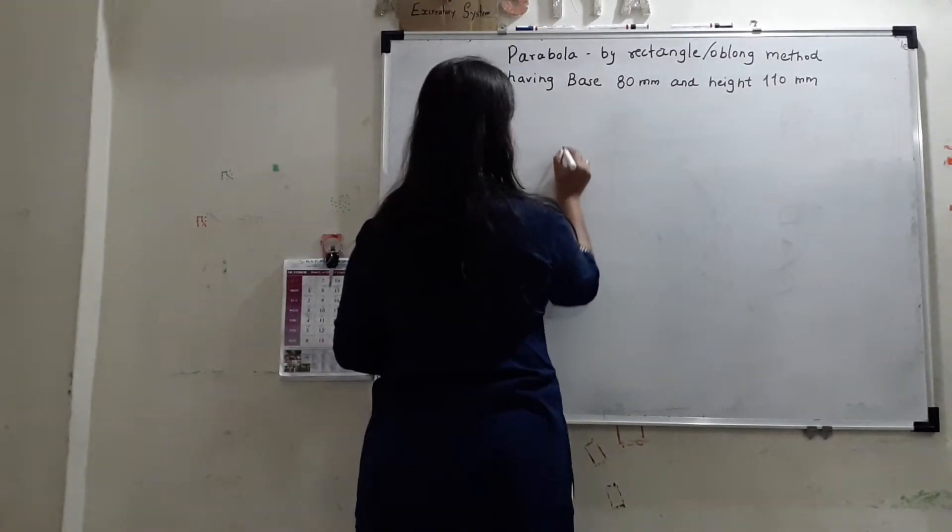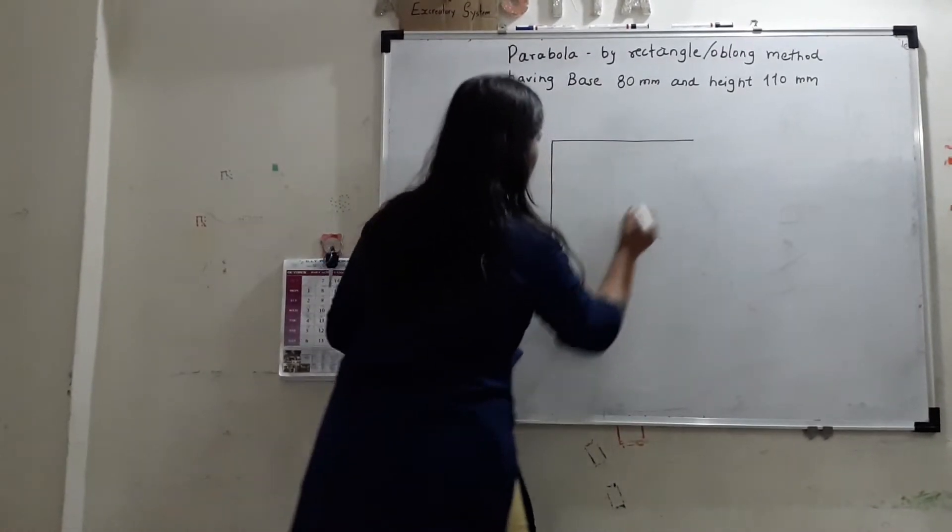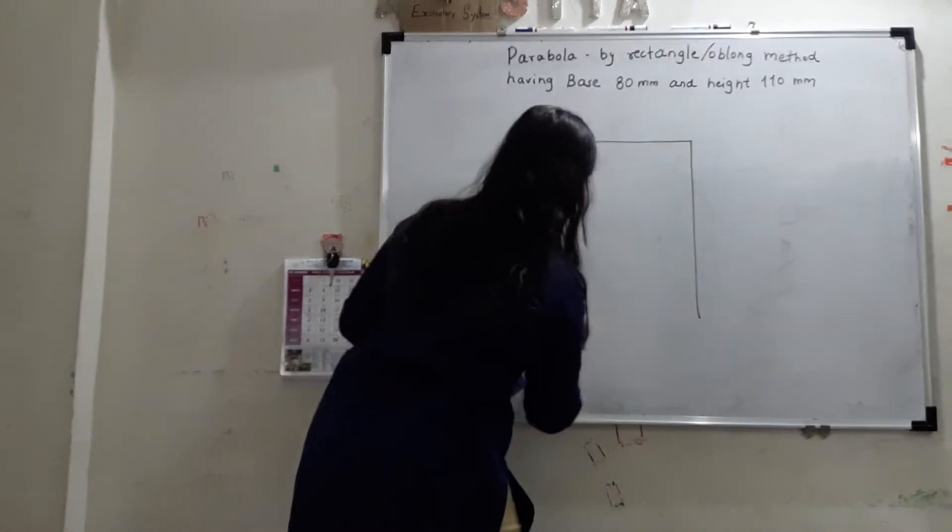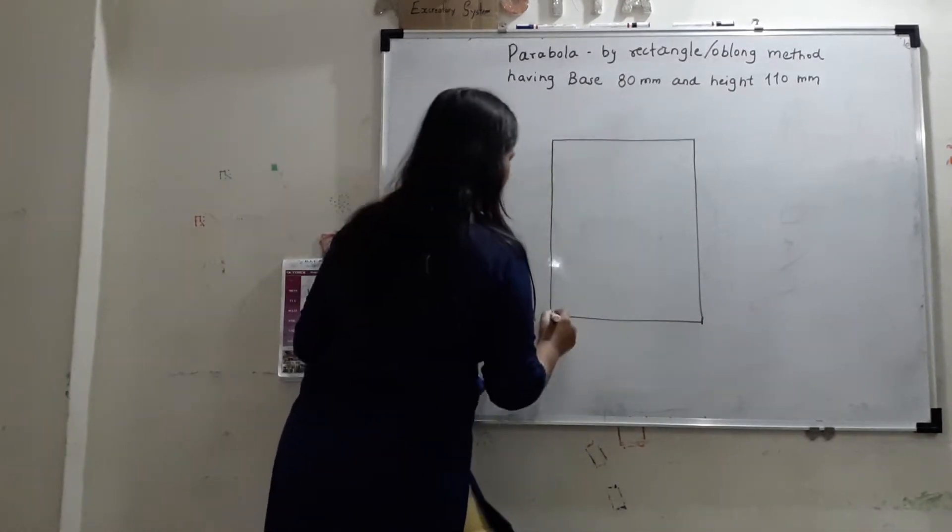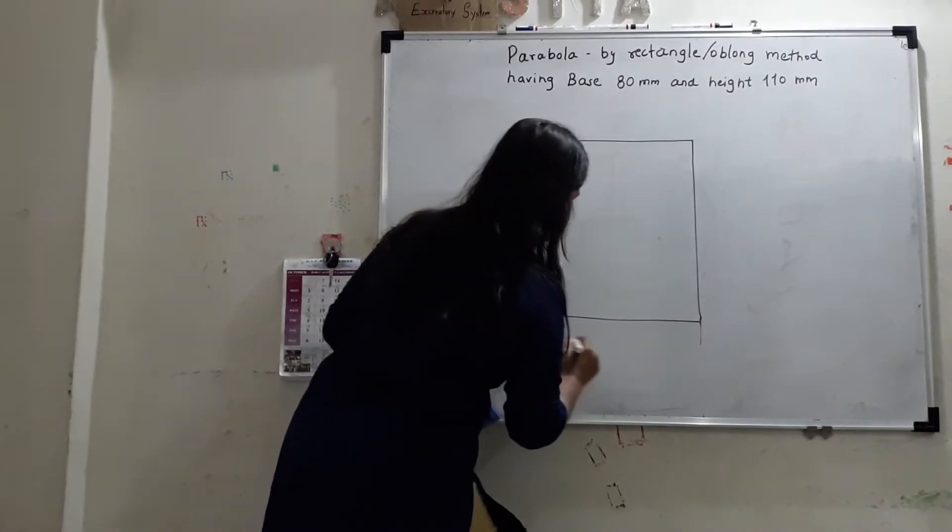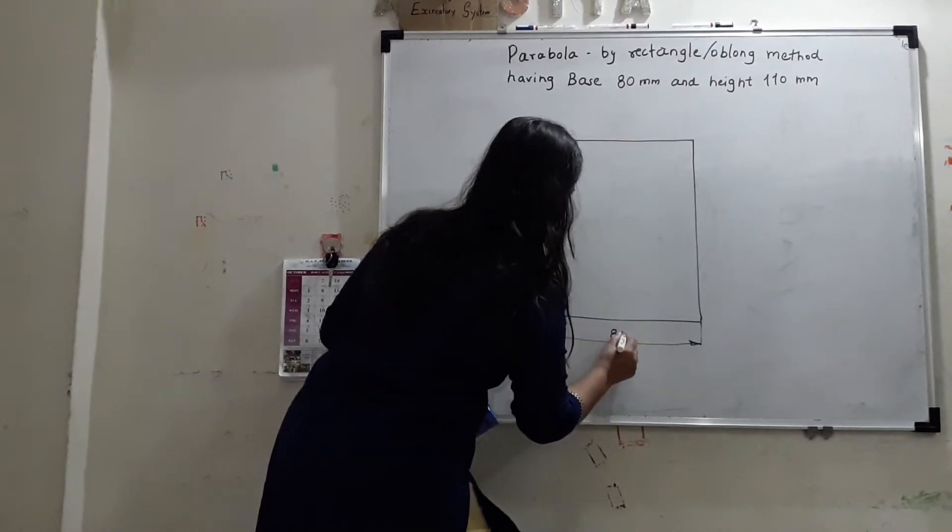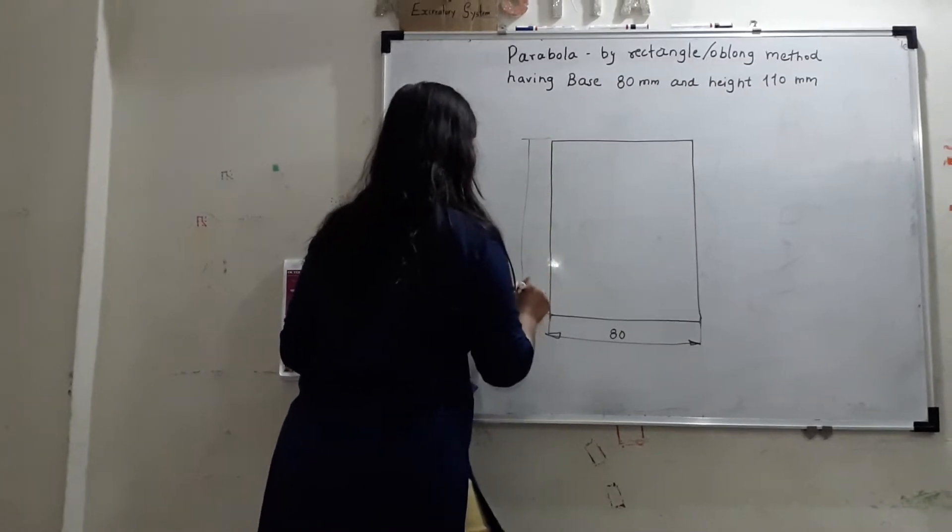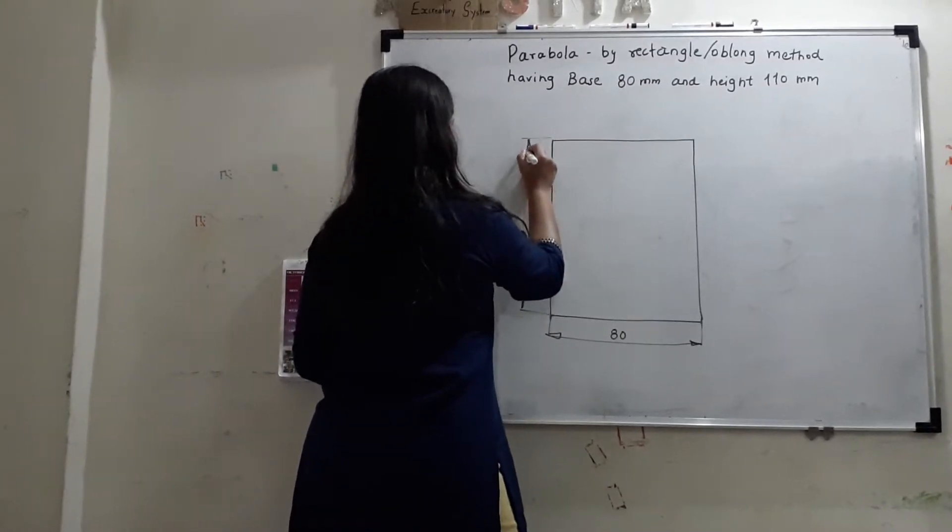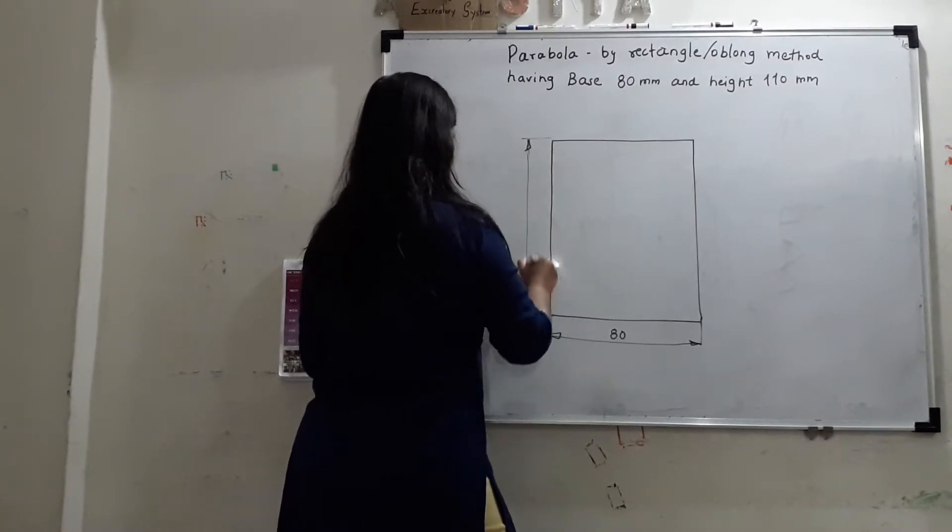And this is the rectangle that we will draw using given dimension. 80 mm is the base length given and height. Axis height is... So, this is 110.